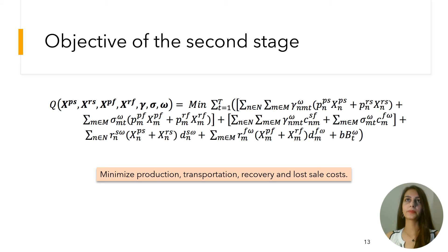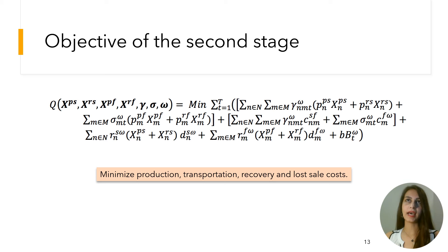The second objective is minimization of production, transportation, recovery, and lost sales costs over the time horizon. The first two terms represent production costs for suppliers and factories. The third and fourth terms represent transportation costs from suppliers to factories and from factories to the warehouse. The next terms show recovery costs for suppliers and factories, and the last term represents the cost of lost sales. These are all costs dependent on when and where disruptions happen and how impactful those disruptions are for the supply chain.